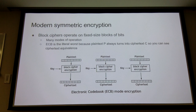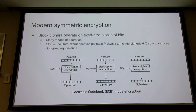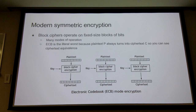Modern symmetric encryption uses a block cipher, which operates on a fixed number of bits. It goes through an encryption box with a key. This is called ECB mode — Electronic Code Book mode. If your plaintext is longer than the number of bits your cipher supports, you just chunk it up.